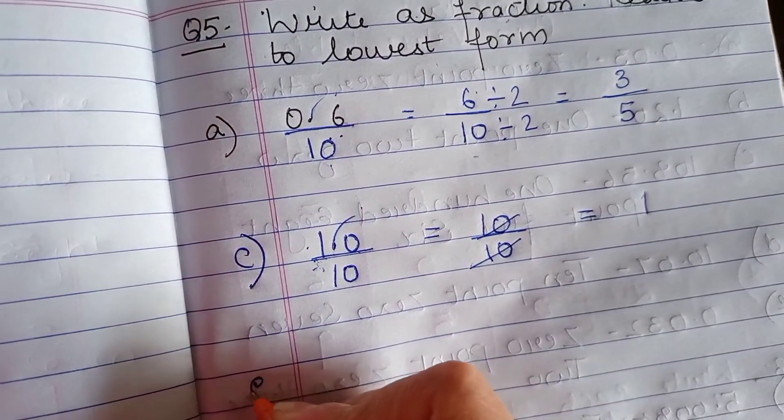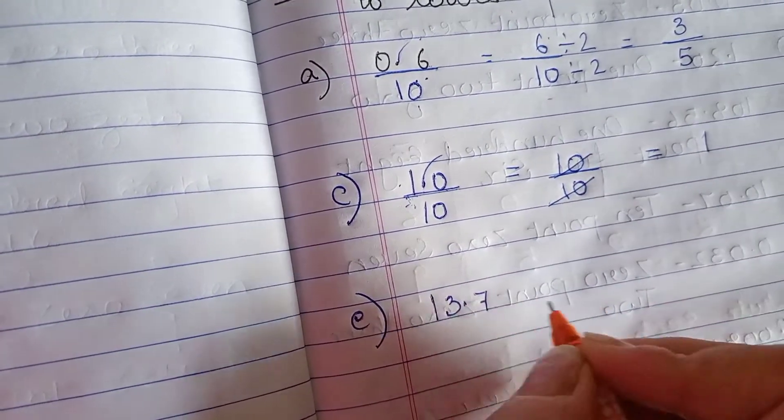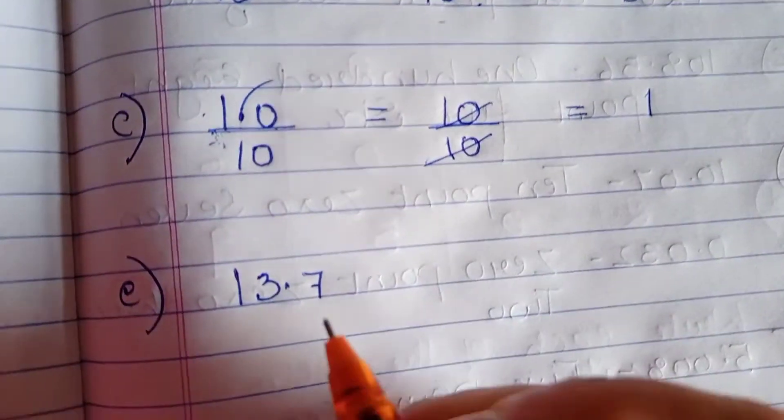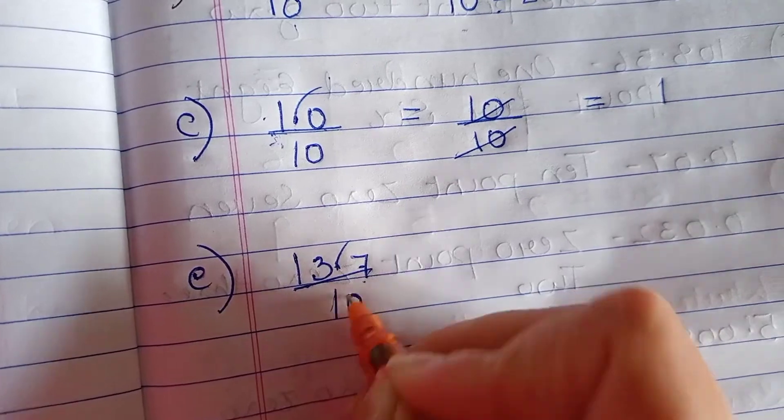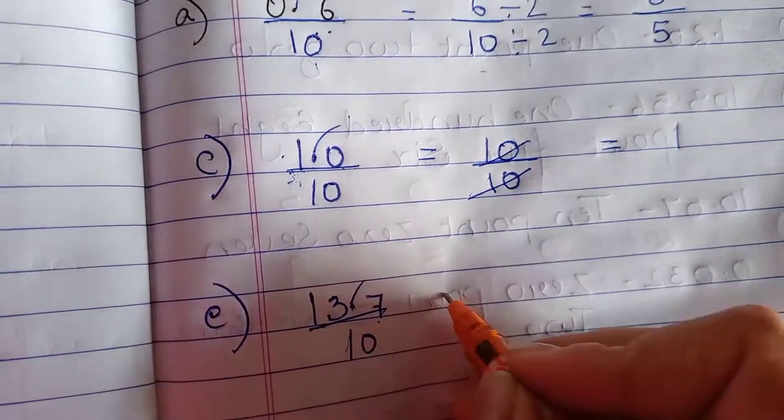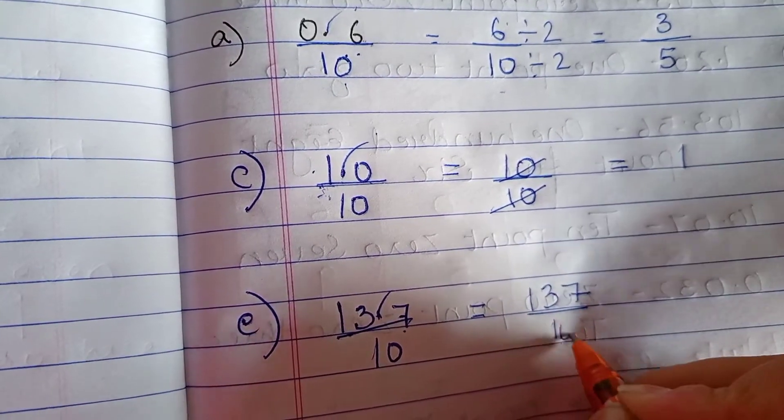Let me do one more part. E part I am doing. That is 13.7. Now again first step. First step is to remove the decimal. How many number? One number is there after decimal. So I will keep 10. Now the number will become 137 upon 10.